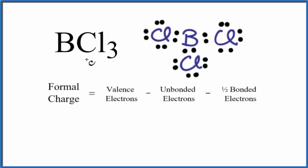To find the formal charges for each element in BCl3, that's boron trichloride, we'll use this Lewis structure here and this equation. So let's do the chlorine first here.